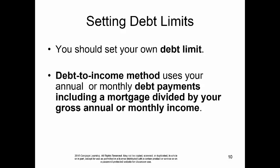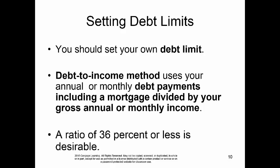The debt-to-income method uses your annual or monthly debt payments including mortgage, divided by your gross annual or monthly income. A ratio of 36% or less is desirable.